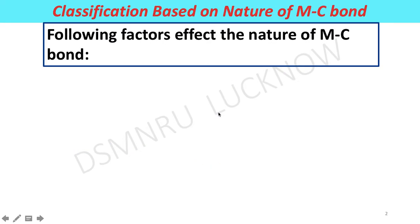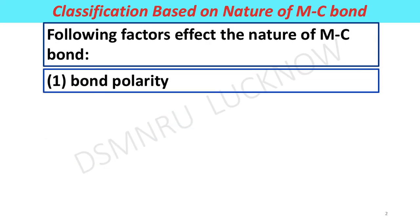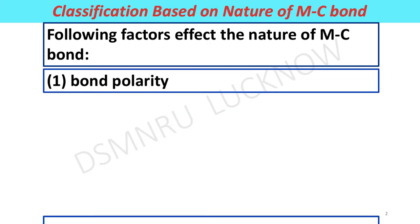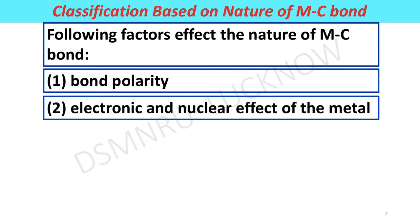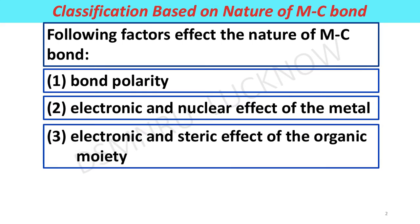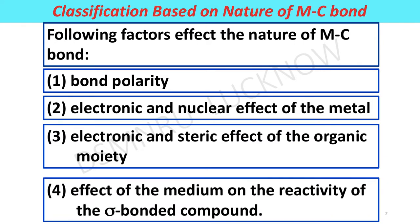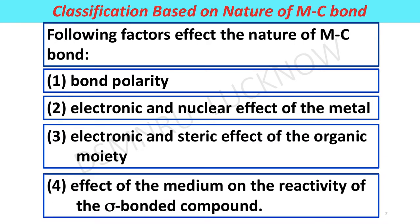The following factors affect the nature of metal-carbon bonds. First, bond polarity. Second, electronic and nuclear effect of the metal. Third, electronic and steric effect of the organic moiety. Fourth, effect of the medium on the reactivity of the sigma-bonded compounds.